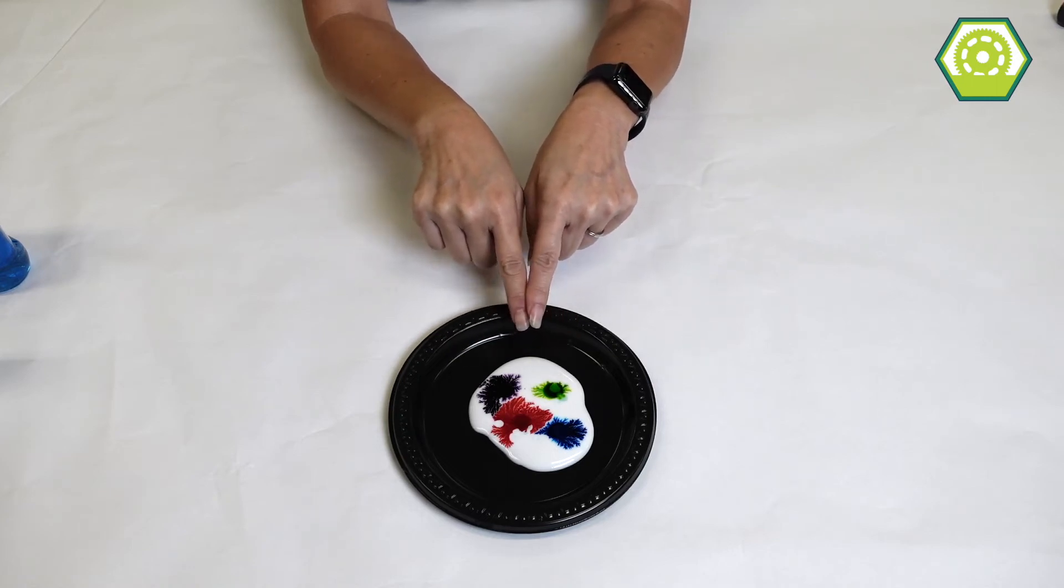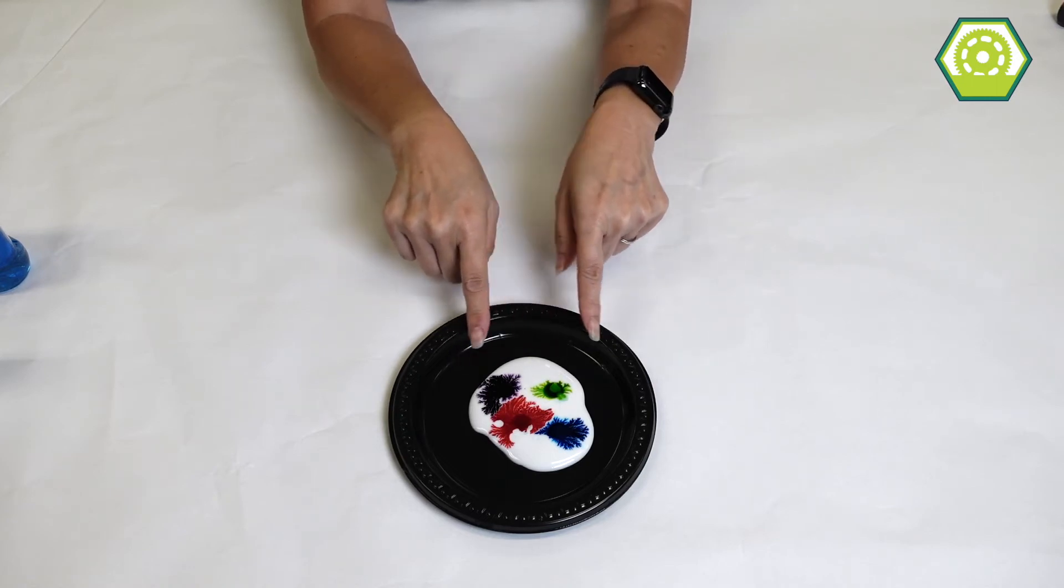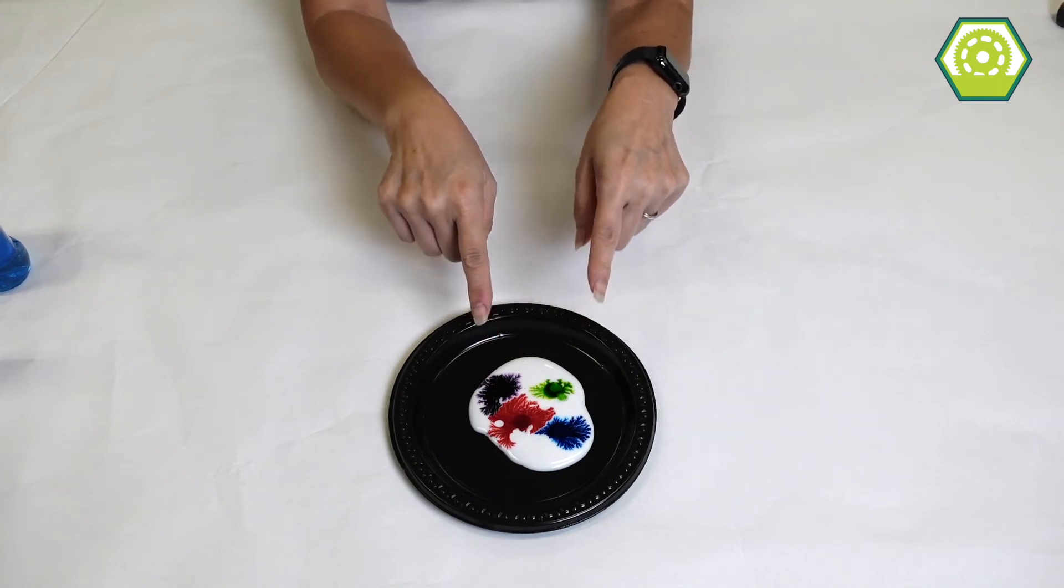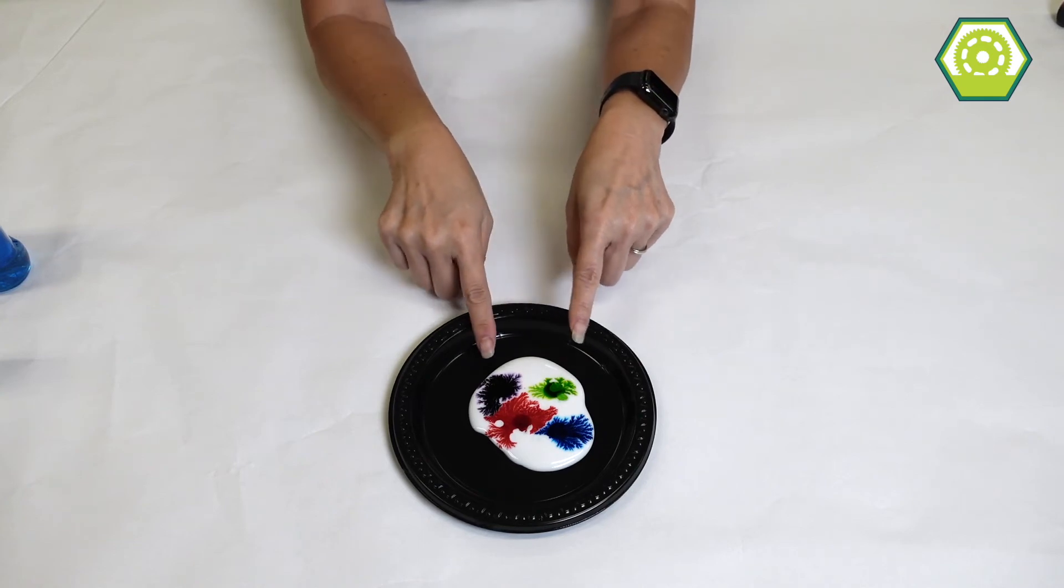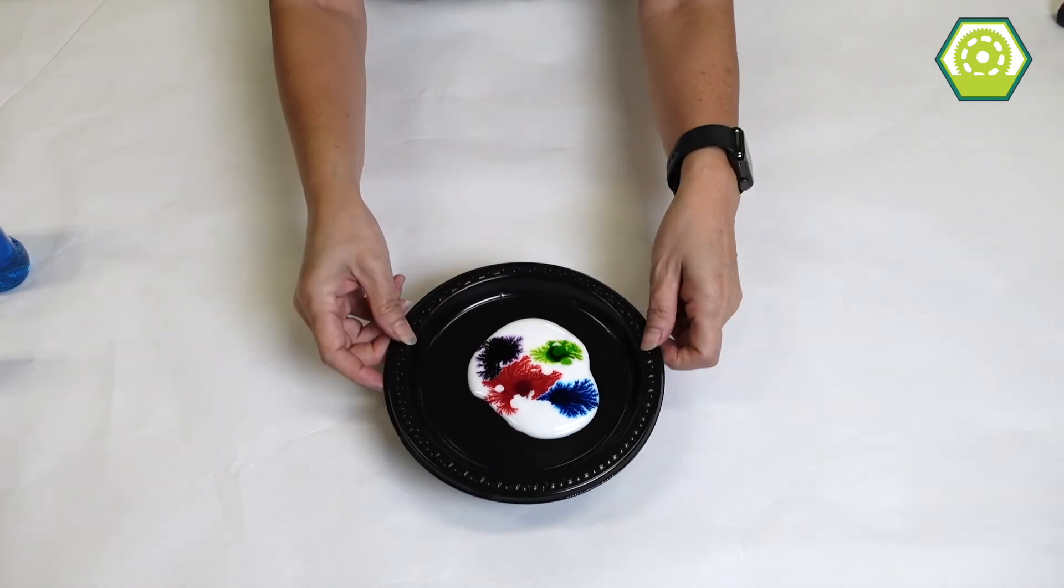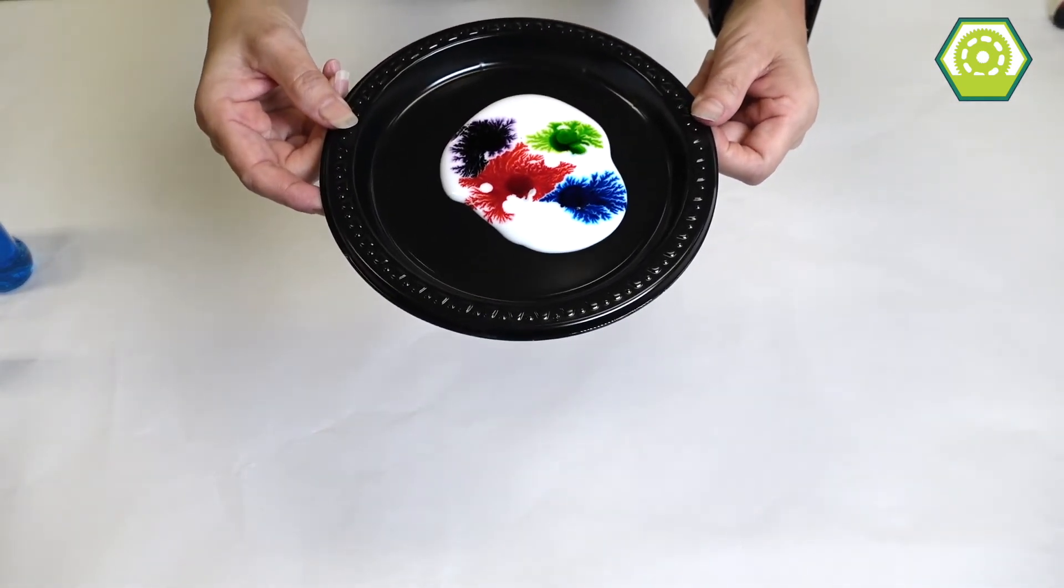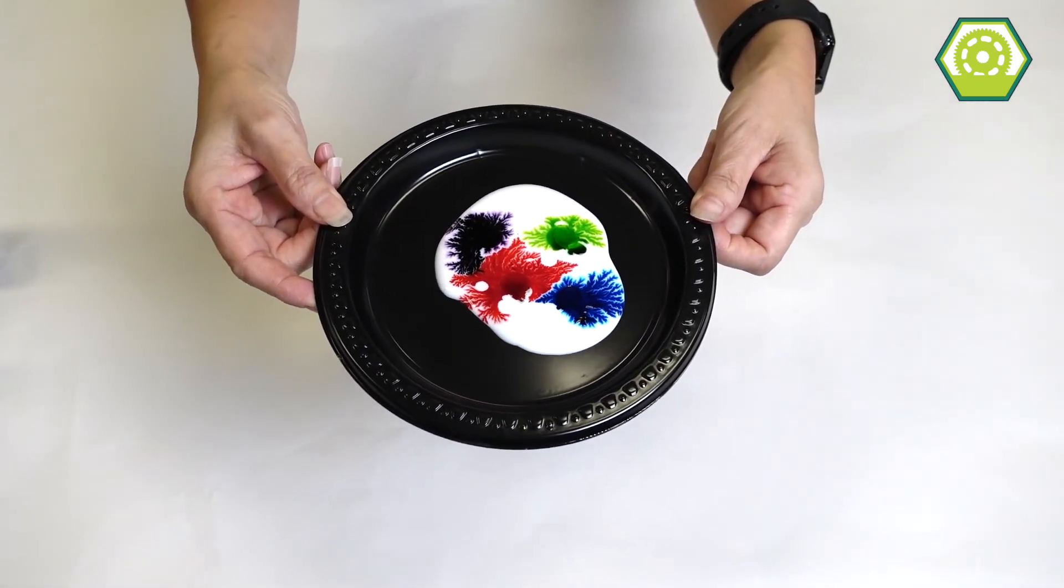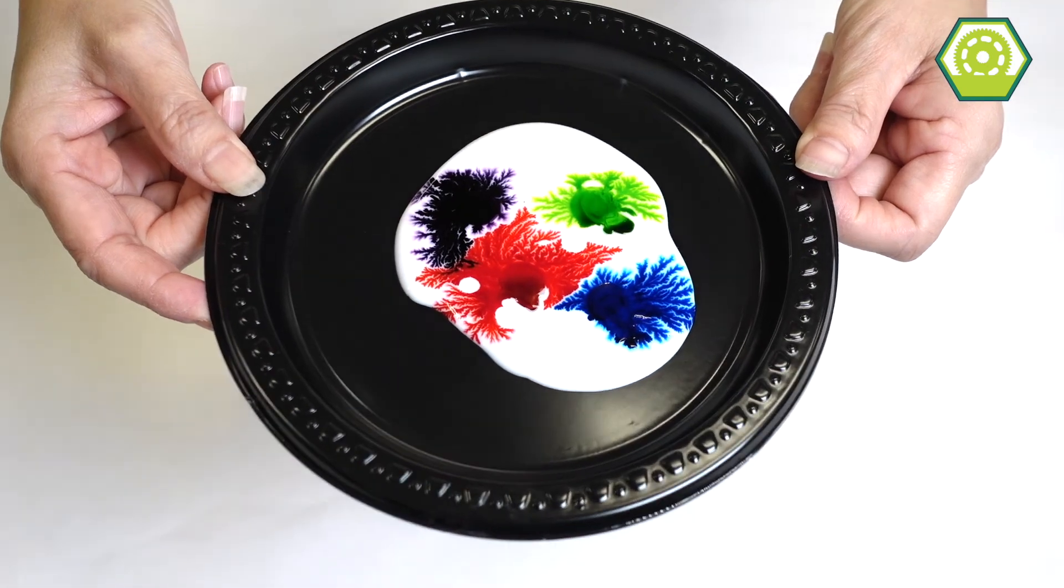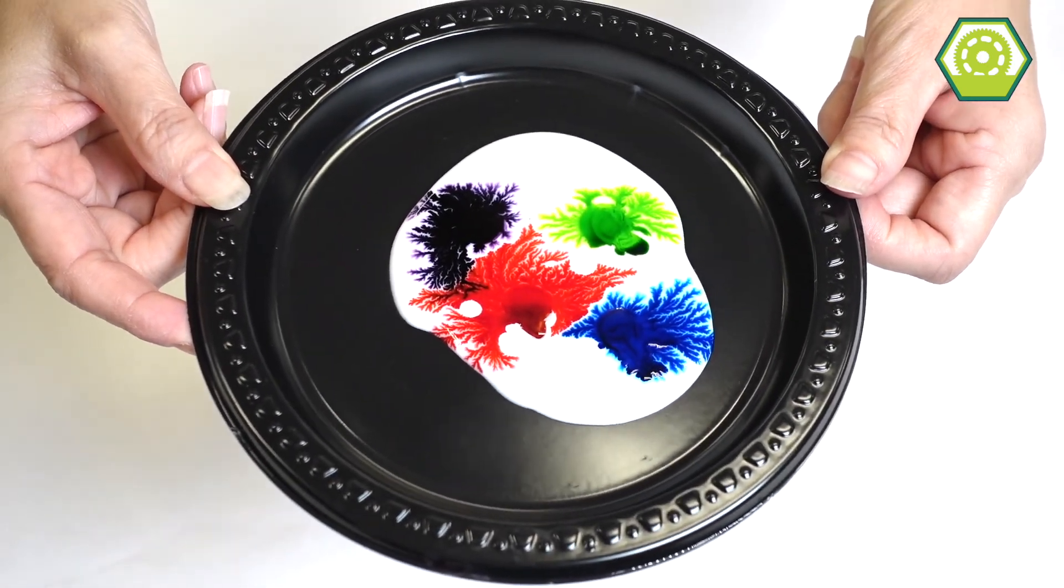So this is a little similar to magic milk but instead of milk we use glue. And the pattern is very different from what you'd see in magic milk. The magic glue creates snowflakes.